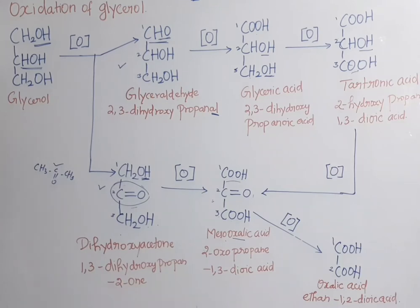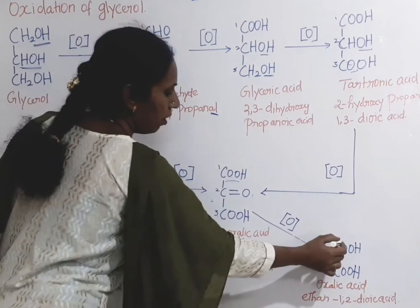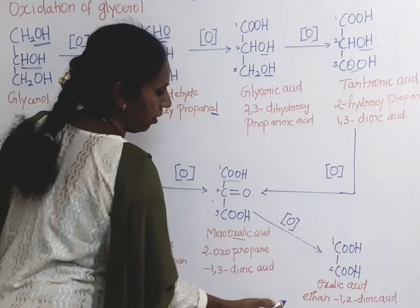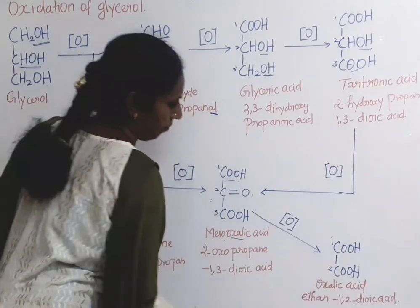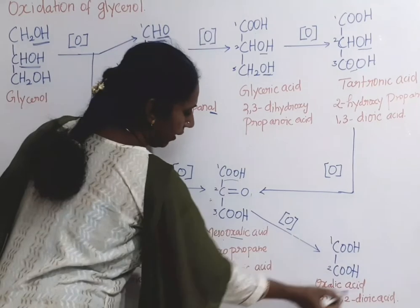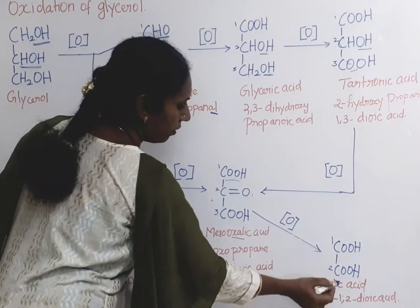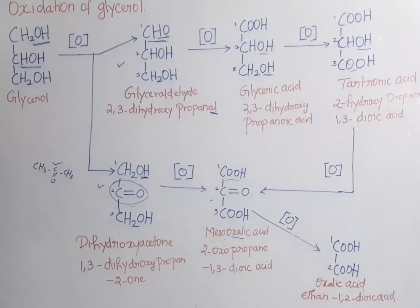In the last step, mesoxalic acid undergoes oxidation to form oxalic acid, otherwise called ethane-1,2-dioic acid — 1,2-dioic acid with 2 carbon atoms, hence 'ethane'. This is all about the oxidation reactions of glycerol.